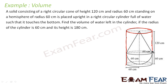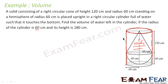Inside this cylinder, the solid — consisting of the conical and hemispherical parts — is placed. The cylinder is full of water. We have to find the volume of the water left in the cylinder, given the cylinder's radius is 60 cm and its total height is 180 cm.